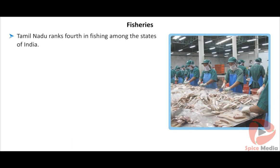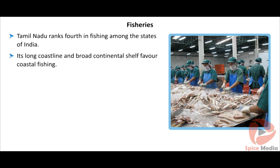Tamil Nadu ranks fourth in fishing among the states of India. Its long coastline and broad continental shelf favour coastal fishing.